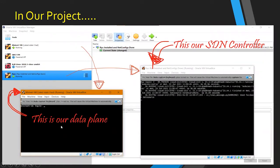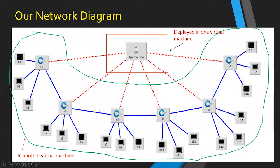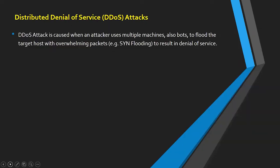In our project we used a Linux virtual machine as our data plane and the Ryu controller, which is an open-source SDN controller. Both are deployed in VirtualBox software. In the network diagram, the Ryu controller is at the center, deployed in a separate virtual machine, and all the other network nodes are deployed in the other virtual machine.